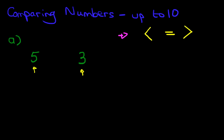So 3 is the smaller number. So the arrow has to point at 3. 5 is more than 3. The arrow is pointing at the smaller number.